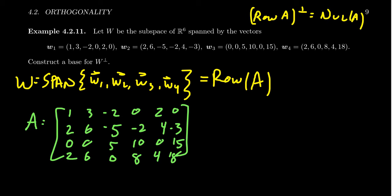When we row reduce this matrix to RREF, we get: row 1 is 1, 3, 0, 4, 2, 0; row 2 is 0, 0, 1, 2, 0, 0; row 3 is 0, 0, 0, 0, 0, 1; and row 4 is all zeros. The last row of zeros tells us that the spanning vectors were linearly dependent, but that doesn't affect our procedure.